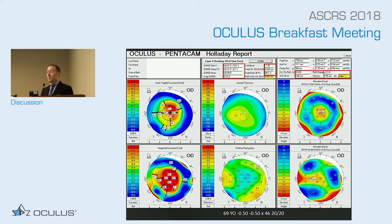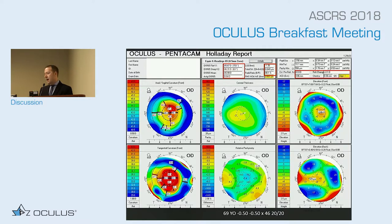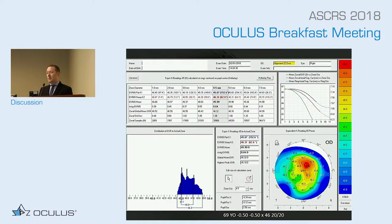Oculus and the IOL Master 700 have both started adopting this technology. We look at chord mu particularly when thinking about centration of IOLs, especially diffractive IOLs. When we look at the true K's including the posterior K, we're getting about a 40-46 diopter cornea — steep and hyperprolate. We completely agree with Dr. Trattler's approach, and we're going to utilize a concept called pseudo-accommodation.